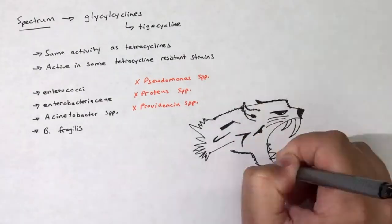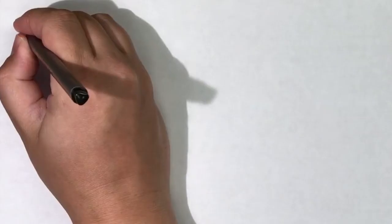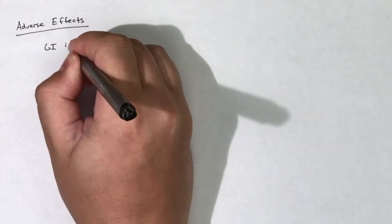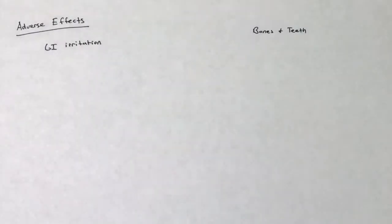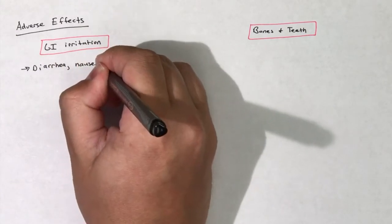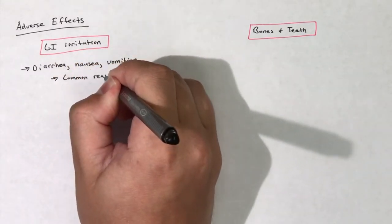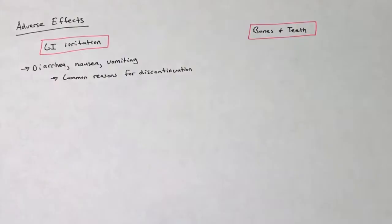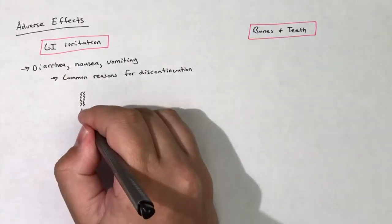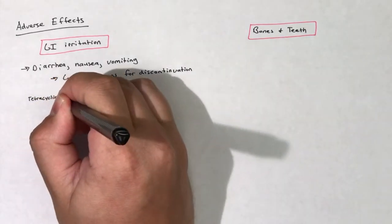The adverse effects for the tetracyclines and glycylcyclines include GI irritation and effects on bone structures and teeth. GI irritation includes diarrhea, nausea, and vomiting, and these are the most common reasons for patients to discontinue tetracyclines or glycylcyclines.